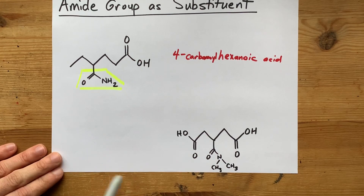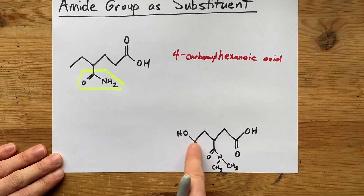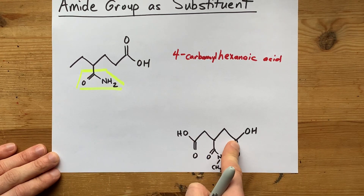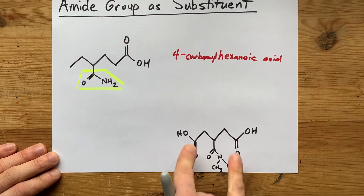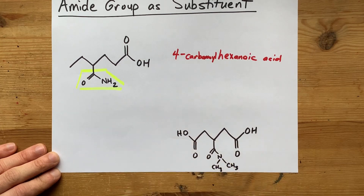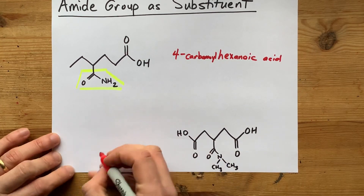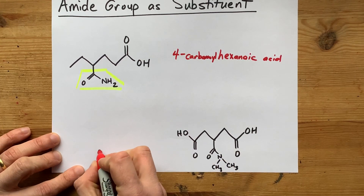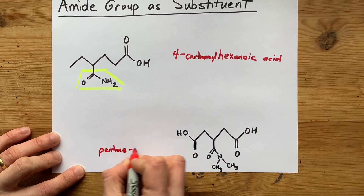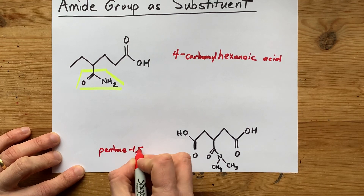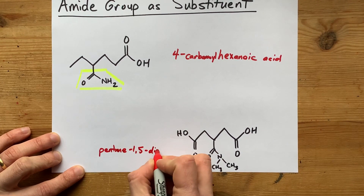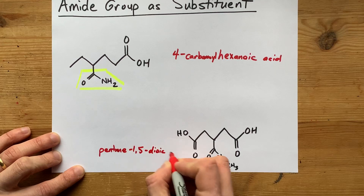This one was sent to me by a viewer. One, two, three, four, five carbons long, and there's a carboxylic acid at both ends. The root of this is pentane-1,5-dioic acid.